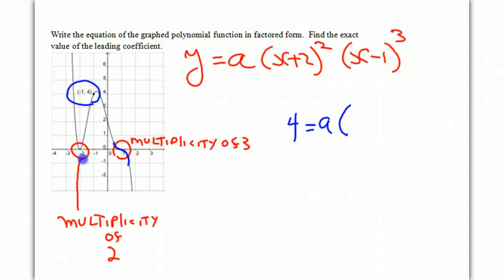So we substitute negative 1 for x. So instead of x plus 2 squared, you get negative 1 plus 2 squared. And then we have, instead of x minus 1, we have negative 1 minus 1 to the third power.